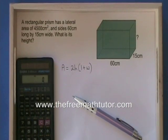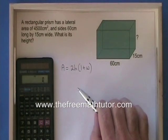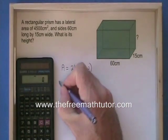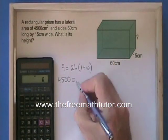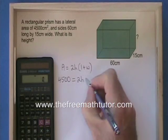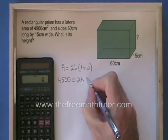If we are given the lateral area of a rectangular prism and the length and the width, we can calculate the height. Here, the lateral area is 4,500. And the length and the width are 60 and 15.